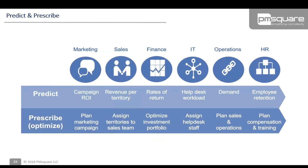Let's relate predictive to prescriptive with business examples. In marketing, you might predict a campaign's return on investment — that's predictive — but based on that you can prescribe a plan or a marketing campaign. At the prediction level, each example provides some type of number that someone could use to do something of business value, but it's not a direct plan itself. At the prescriptive level, optimization is taking place to help you figure out what action to take with that information.